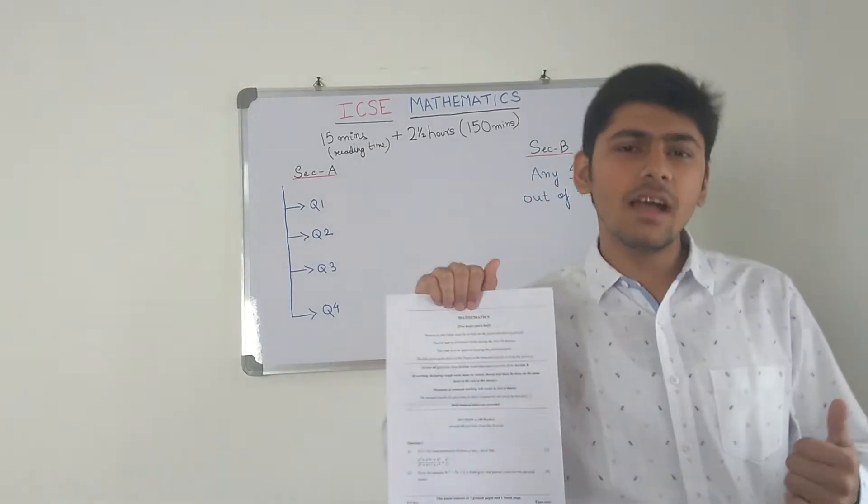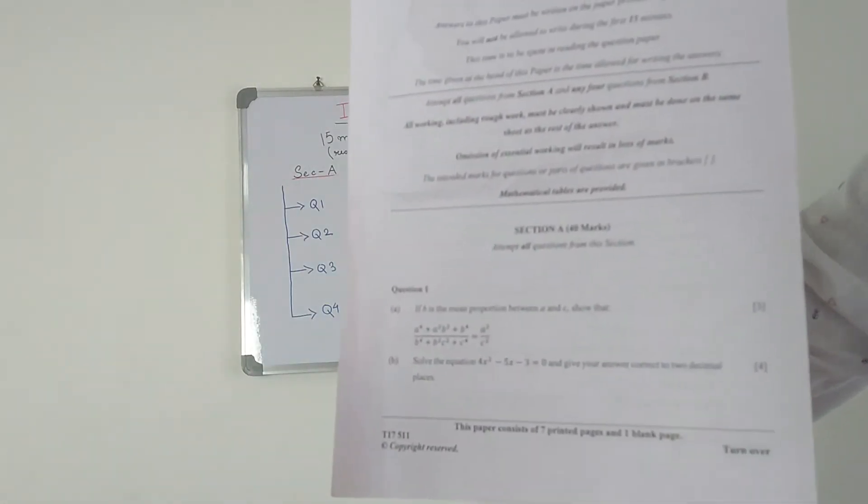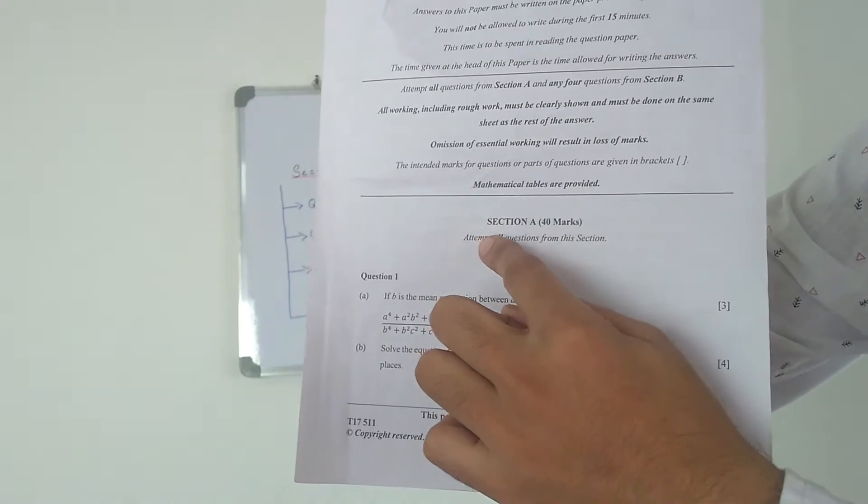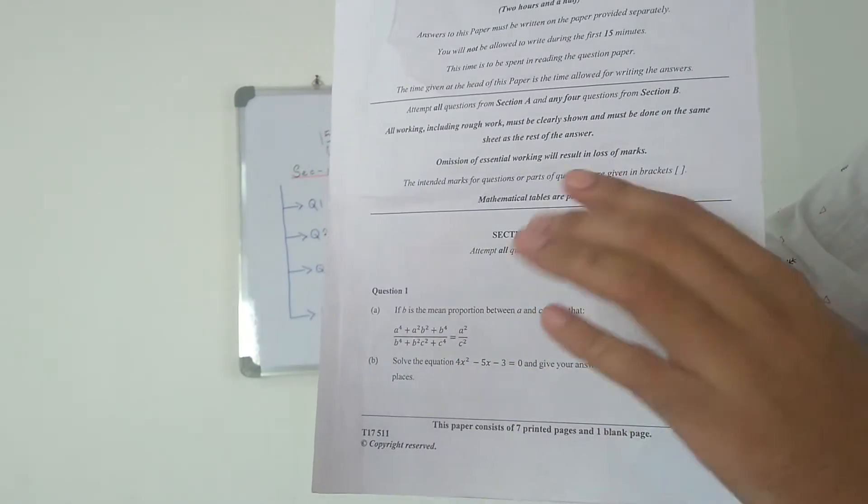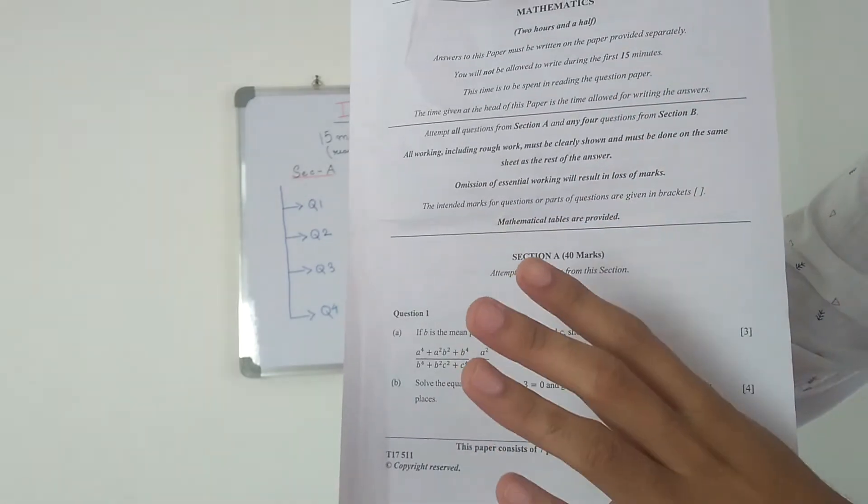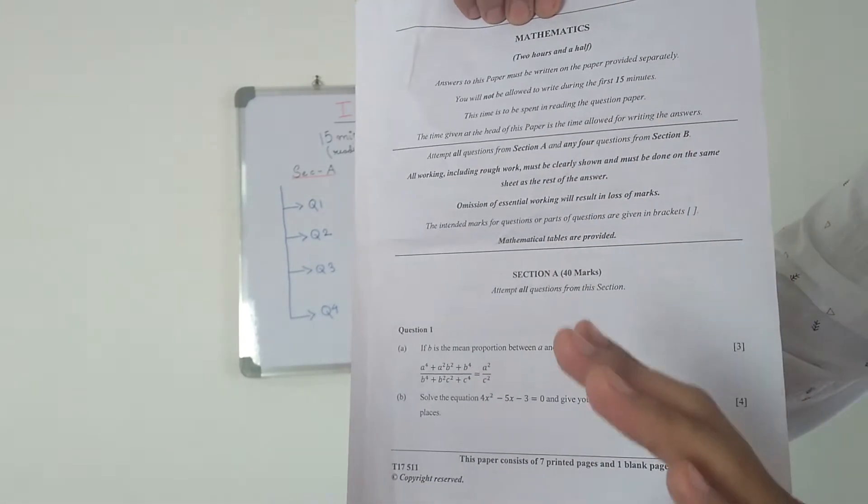So now let's have a general overview of the paper. Well, I was just kidding. We have section A, 40 marks. You have to attempt all the questions from this section. There will be 4 questions - question 1, 2, 3 and 4 with 3 subparts each: A, B and C. You have to attempt everything from this section.